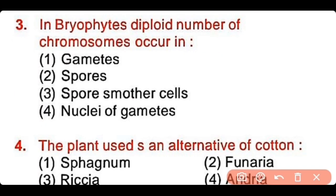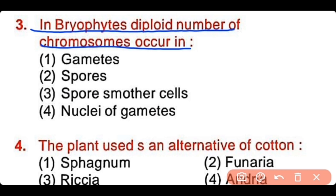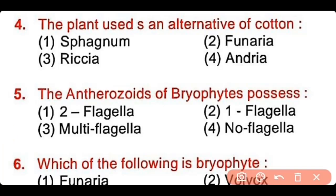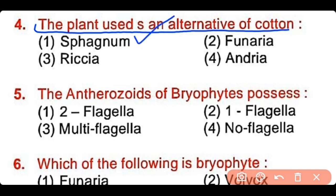Question number 3: In bryophytes, the diploid number of chromosomes occurs in gametes, spores, spore mother cells, or nuclei of gametes. The answer is option 3 — the spore mother cells in bryophytes are diploid. Question number 4: The plant that is used as an alternative of cotton is Sphagnum, Funeria, Retia, or Rea. The correct answer is option 1. Sphagnum moss is used as an alternative of cotton.